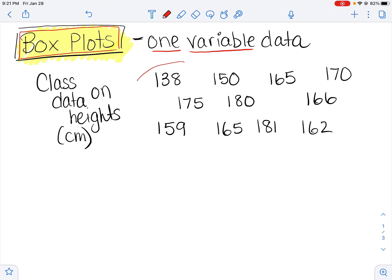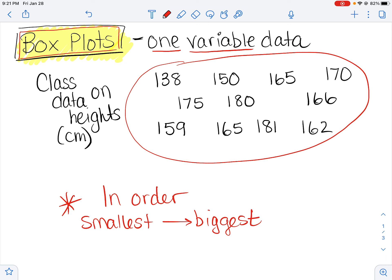So let's say these are all the heights of the people in our class in centimeters. So there's someone that's 138 centimeters, 150, 159, 162, 165, 165, 166, 170, 175, 180, 181. So there's 11 different people and their heights. If we wanted to create a box plot to display this data, first step, we would have to put the data in order from smallest to biggest. So you have to do that first. That's your first step.